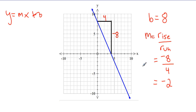So that will give us our equation. Y is equal to negative two x plus eight. And there it is. There's my y equals mx plus b form.